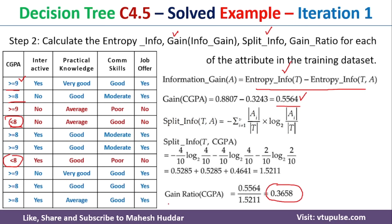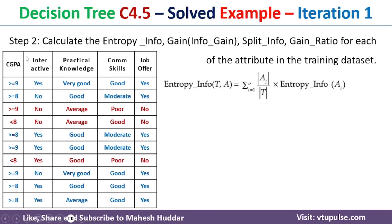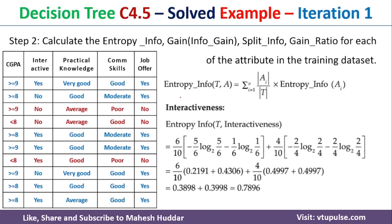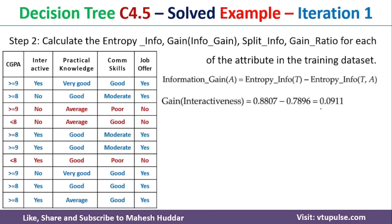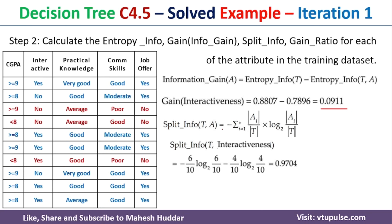The same procedure is followed for the remaining three attributes. For interactiveness, the entropy info is 0.7896, information gain is 0.0911, split info is 0.9704, and gain ratio is 0.0939.